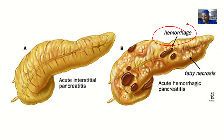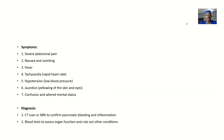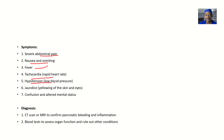There was inflammation that was left unmanaged, and that inflammation resulted in this hemorrhage. What are the symptoms? There will be severe abdominal pain, acute abdomen, nausea and vomiting, fever, tachycardia — that's a rapid heartbeat — hypotension — that's low blood pressure — jaundice, which is yellowing of the skin and eyes, and confusion and altered mental status.